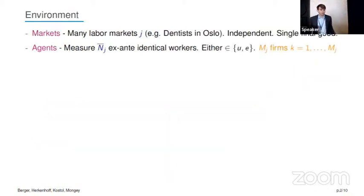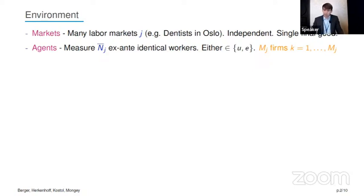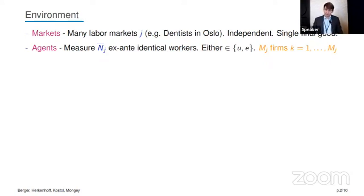Let me jump straight into the environment. In the model, there are many labor markets indexed by lowercase j. You can think of a labor market as an occupation within a commuting zone — so dentists in Oslo or psychologists in Bergen. These labor markets are independent; workers are not going to be able to flow across labor markets, and we assume there is a single final good.